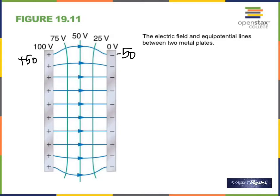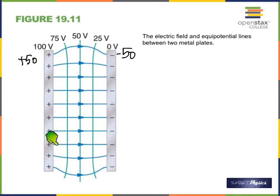The green lines are equipotential surfaces and the blue lines show the electric field. When electric field lines are parallel and equally spaced, that means the field is constant — same strength everywhere, except at the edges. If field lines are closer together, the field is stronger. The green equipotential lines remain perpendicular to the field lines.